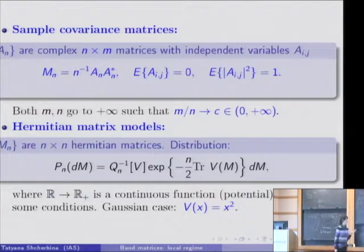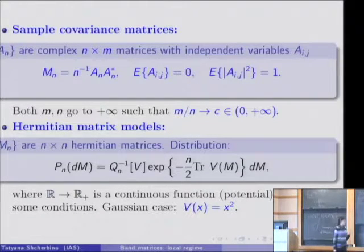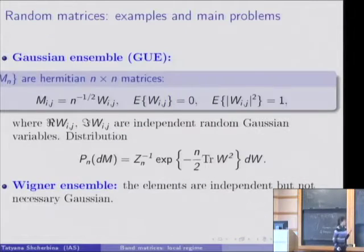And the fourth example is a Hermitian matrix model. The previous example was generated by the elements. Here we write the integral probability distribution for the whole matrices. It can be written in this exponential form with the potential V. Note that if we take V equal to x squared, we obtain the Gaussian unitary ensemble from the previous slide, this one.